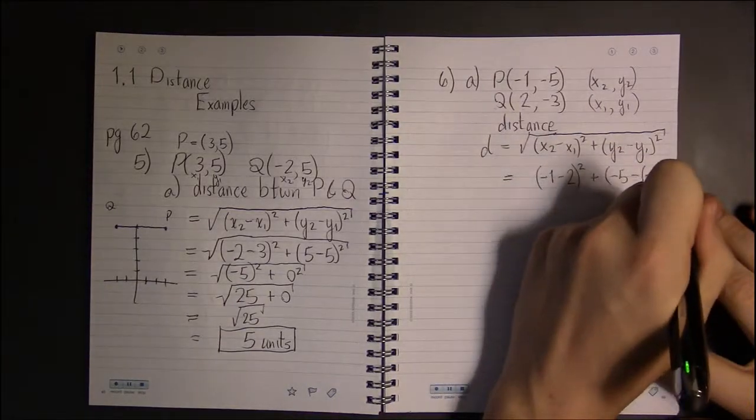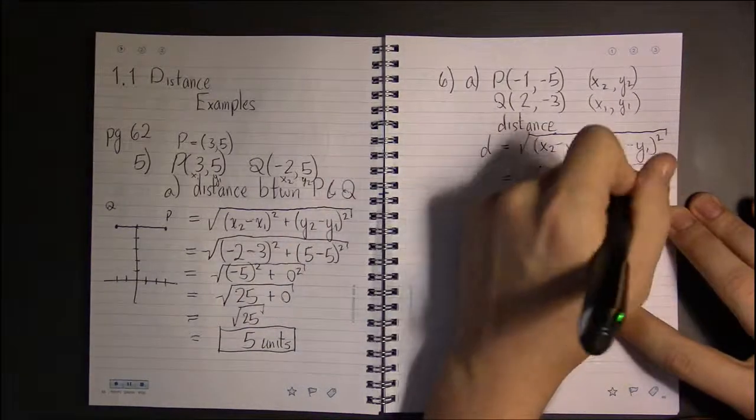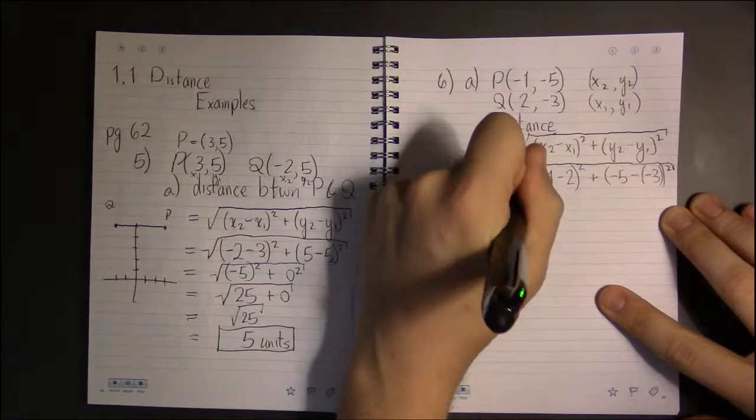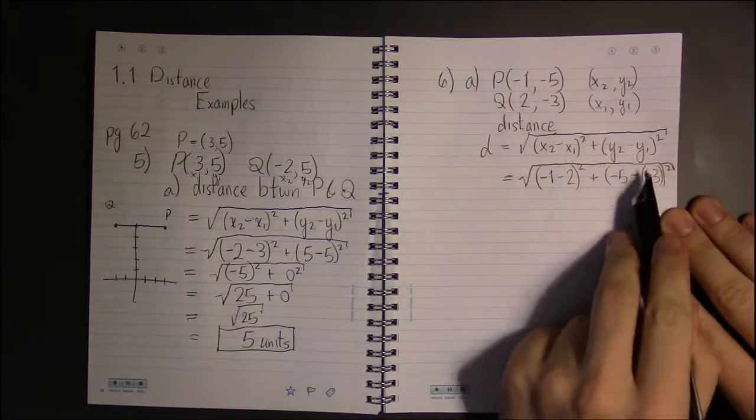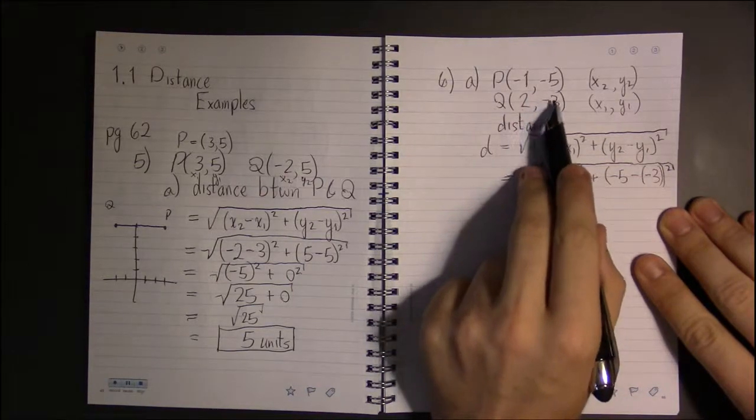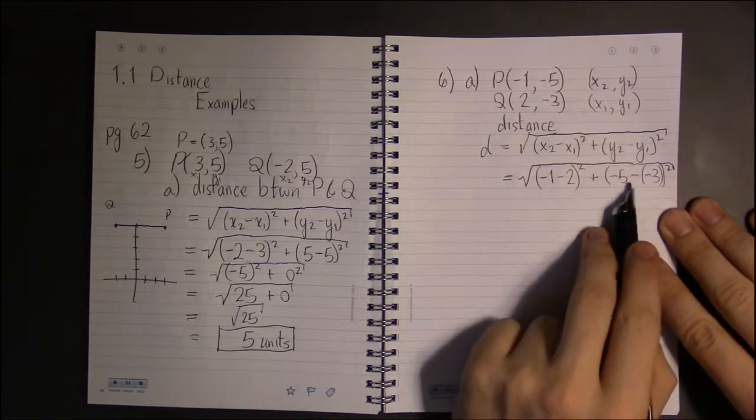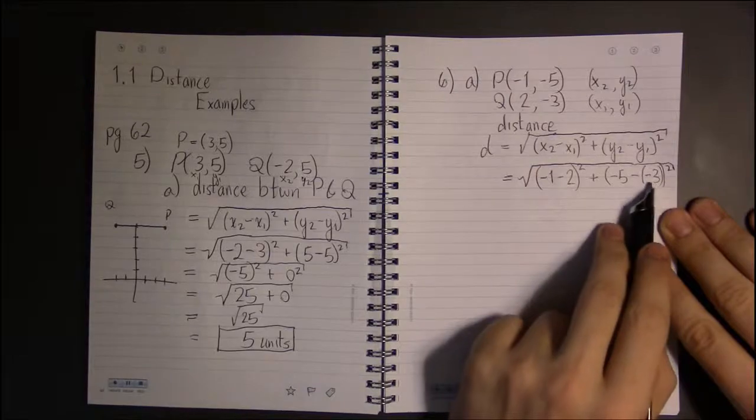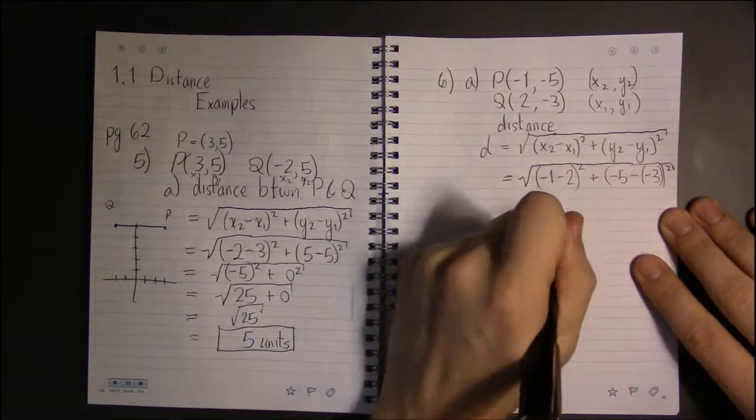y2 is P, so that's -5, and y1 is -3. Be careful when substituting this in because this -3 has two negatives in front of it. There's a negative in the formula and there's a negative on the three just from the point. So those two negatives have to appear there or you're going to get the wrong answer.